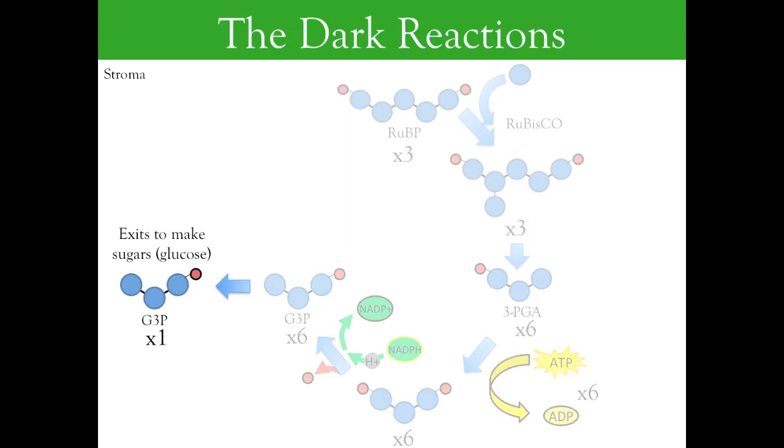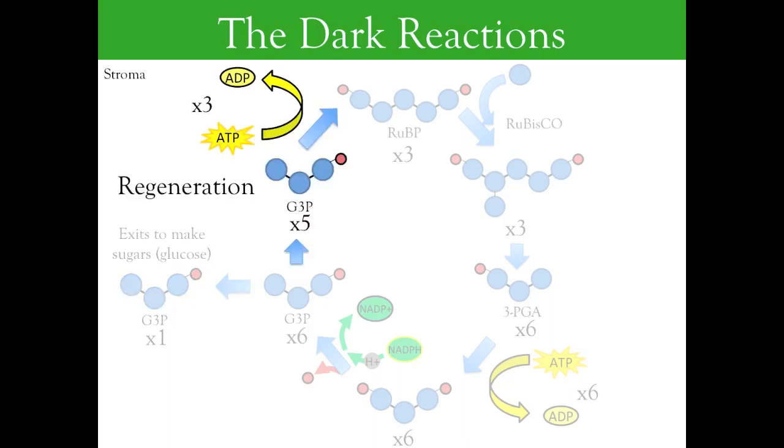The remaining five G3P molecules re-enter the reaction and are converted into three RuBP molecules. This step is known as regeneration because it regenerates the supply of RuBP, which will be used in the next round of carbon fixation.